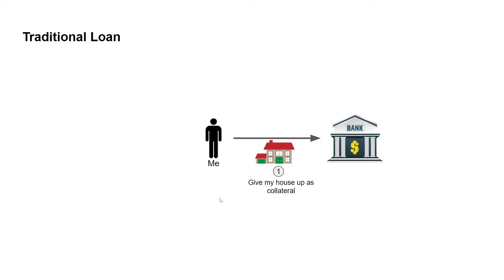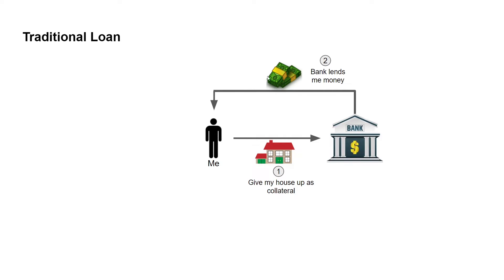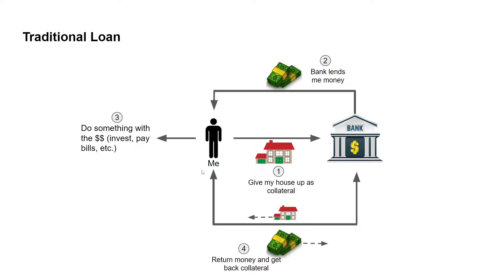To provide context, let's look at what a traditional collateralized loan looks like. If I want to borrow money from a bank, I can give my house up as collateral. The bank then gives me some money to borrow, usually less than the value of the collateral — making it an over-collateralized loan. I can use that money to invest, pay bills, etc. Once I repay the loan with interest, the bank releases my collateral and returns my house.